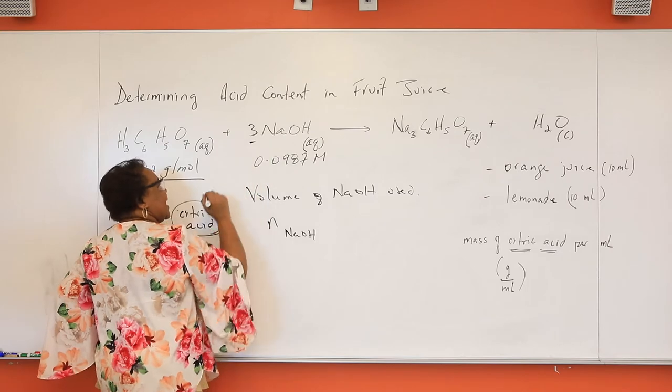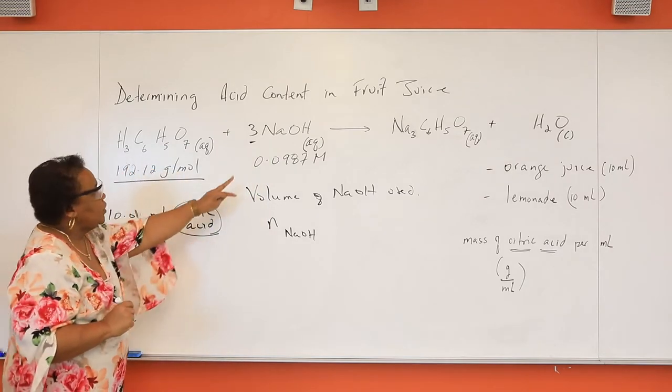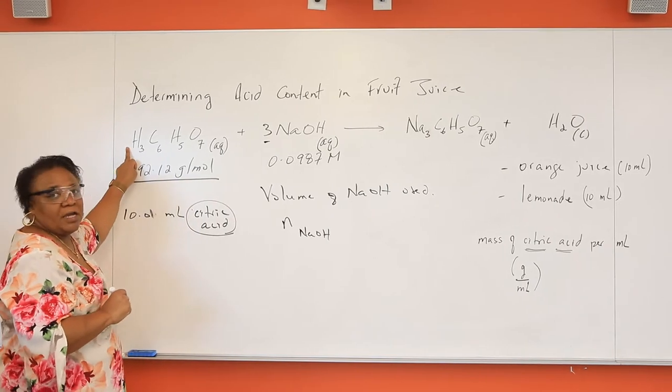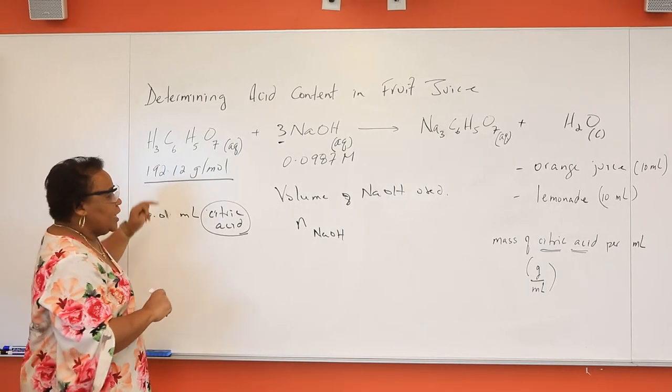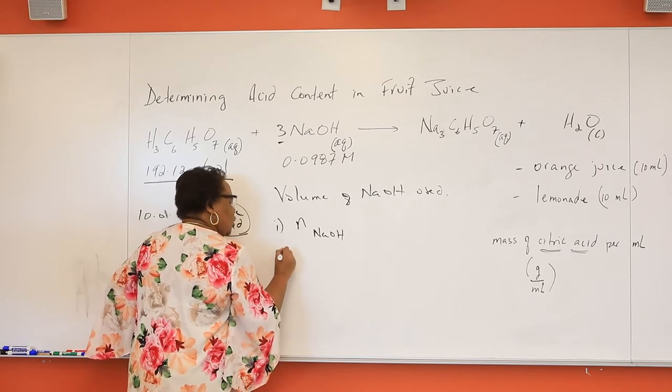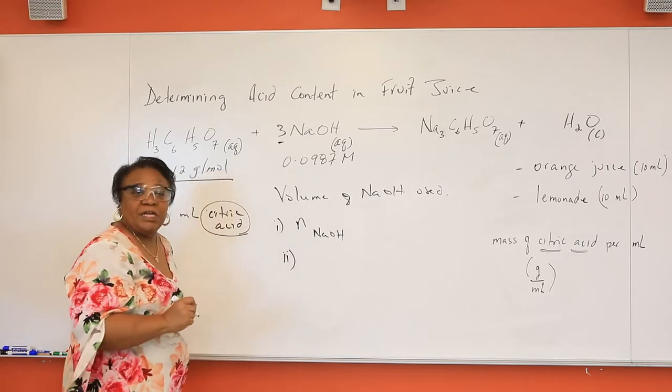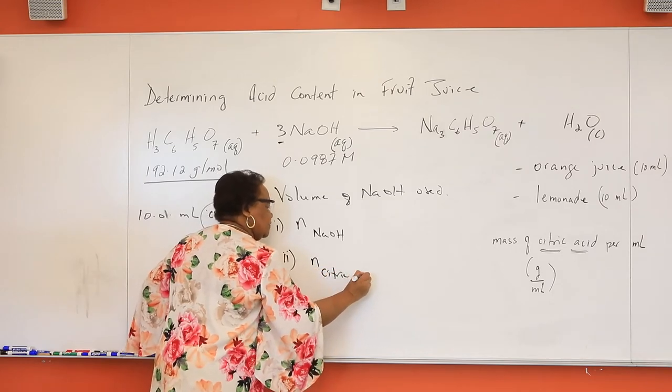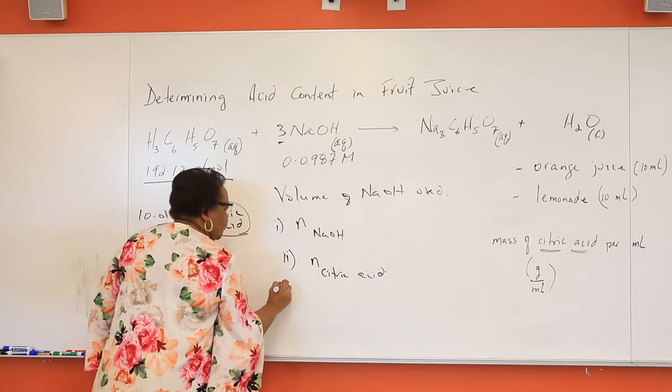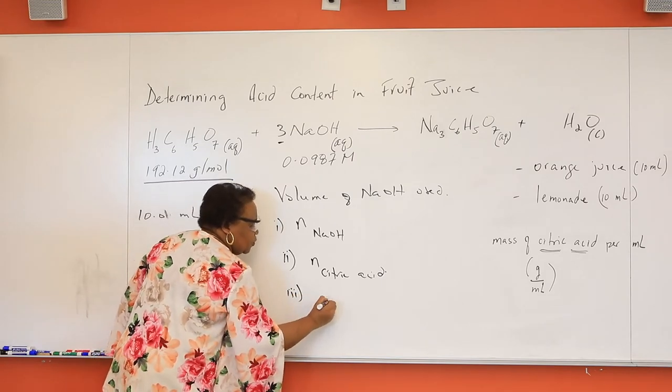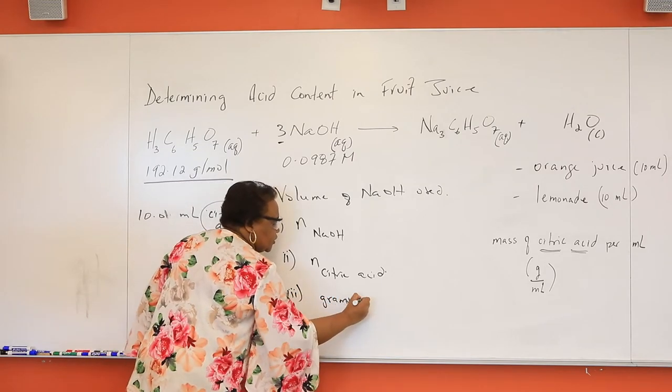Why not? Because in this balanced chemical equation, we have a 3 to 1 mole-mole relationship. So from your moles of sodium hydroxide, using that mole-mole relationship, you can determine the moles of citric acid. And from the moles of citric acid, you can find the grams of citric acid.